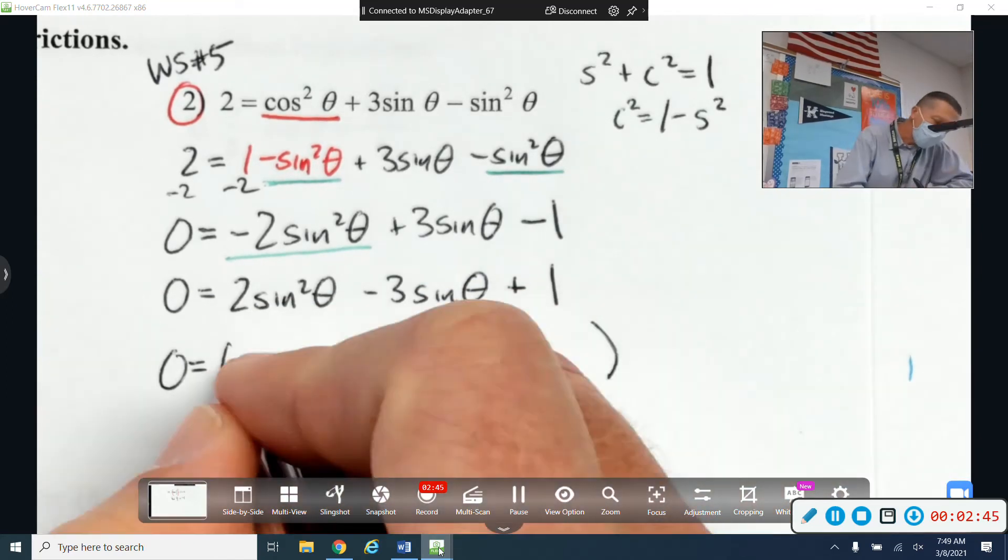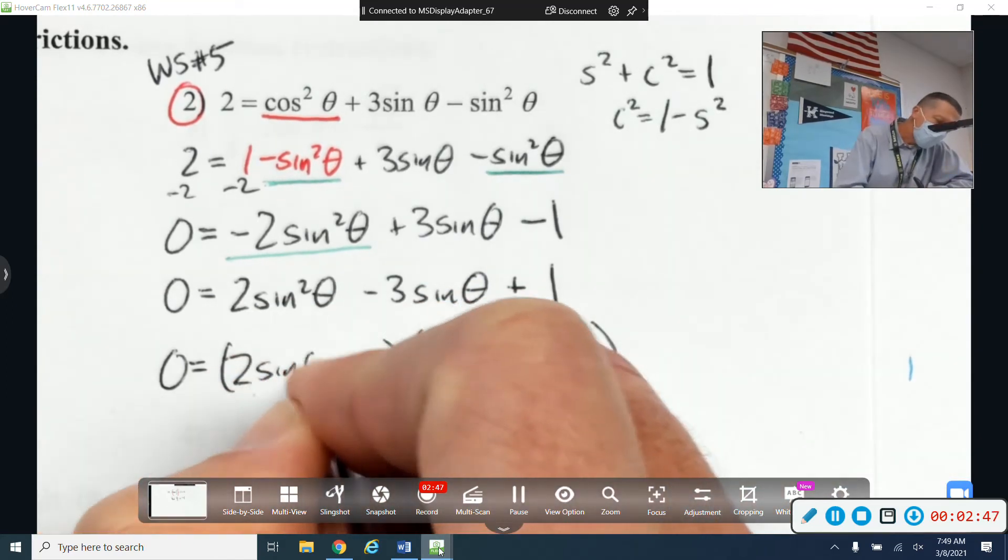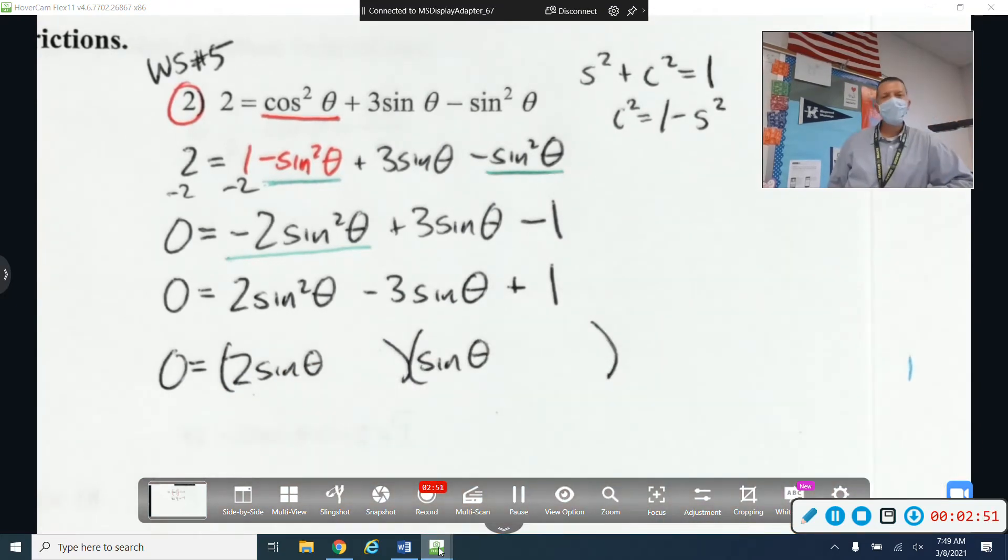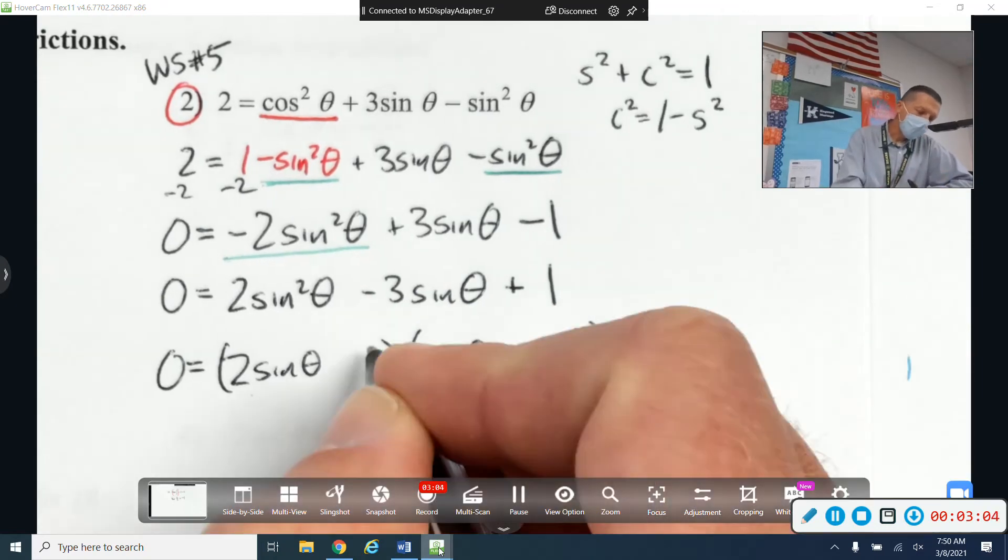All right, so let's factor this guy now. Again, you can use the u's if you want to. But I think once you've done some of these, it's the same thing. It's just, if you really don't like looking at sines, you can put u's in there. All right, it's got to be 2 and 1 in order to get 2 sine squared. It's got to be 1 and 1 in order to get 1.